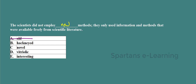Hackneyed means something which is overused or trite. Novel means new, so this can be the answer. Vitriolic means acerbic, sharp-tongued — acidic — out of context. Interesting is also out of context. Old is the opposite of new, so cancel it. Your answer will be option C: novel.